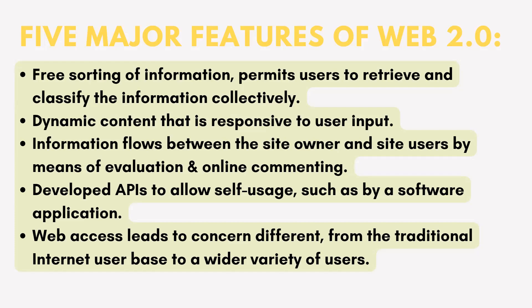Now let's talk about the five major features of a Web 2 website. First, you can sort information on the web from the front-end — it permits users to retrieve and classify information collectively. Second, the content is dynamic, meaning it is responsive to user input. Third, information flows between the site owner and the site user by means of evaluation and online commenting. Fourth is the development of APIs to allow self-use by software applications. And fifth, web access extends from the traditional internet user base to a wider variety of users.